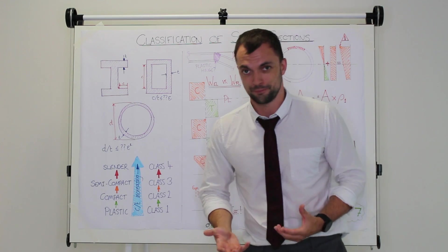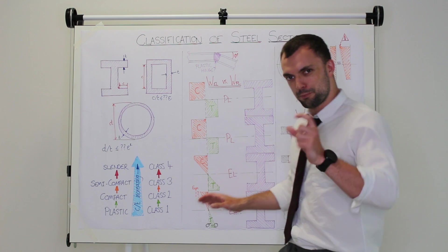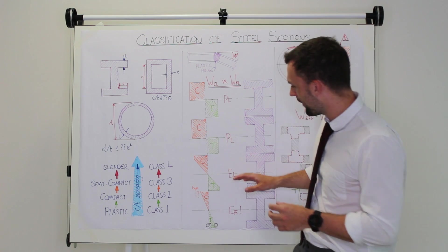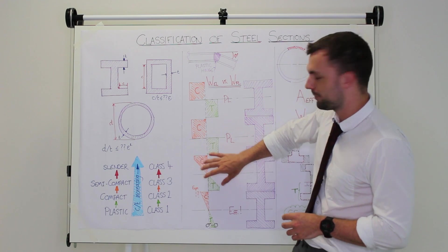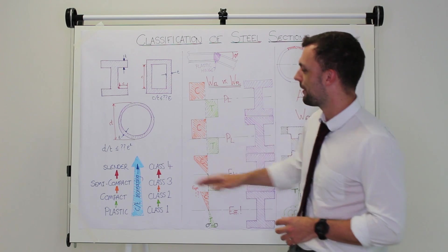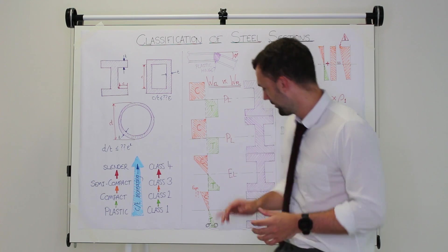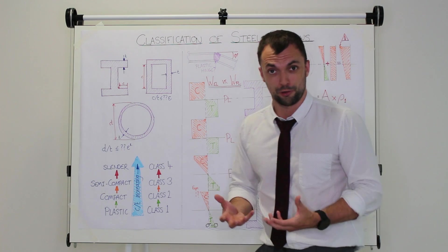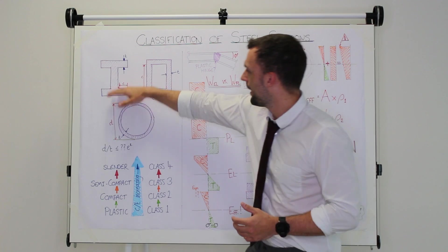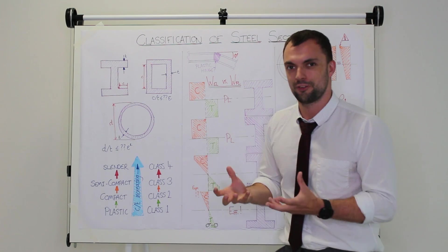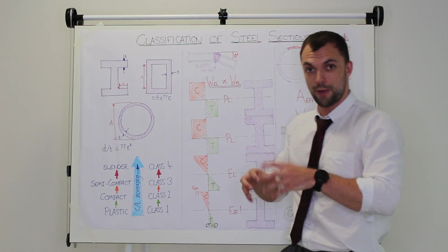What happens on a class 3 section is that it can get to its elastic limit and perhaps it can get a little bit further. If your section is only just on the boundary between class 2 and class 3, you might be able to get quite a bit of plastic distribution somewhere between here and here, but if you're right on the border between class 3 and class 4, you'll just barely be able to get to your full elastic distribution before you end up buckling something. So if you have a very thin, very long outstand flange, by the time you've got that stress at that edge, your flanges are wanting to buckle. If you've got a very tall, very slender web, by the time you've started bending it, your web wants to collapse.